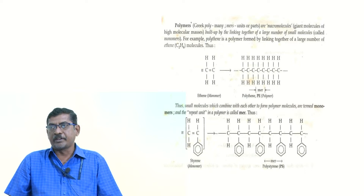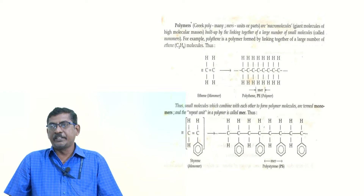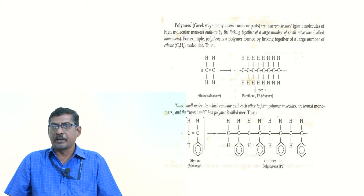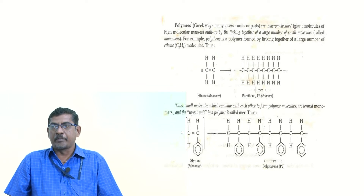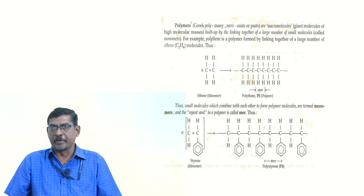The best example is the formation of polyethylene. Ethylene is a small molecule — it is called the monomer. N number of monomers, where n may be hundred, thousand, or tens of thousands, are combined in the presence of temperature, pressure, and catalyst to form a macromolecule called polymer.